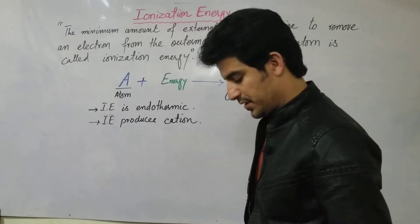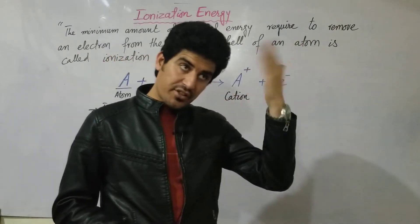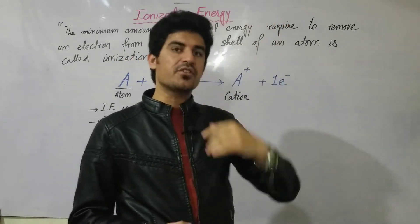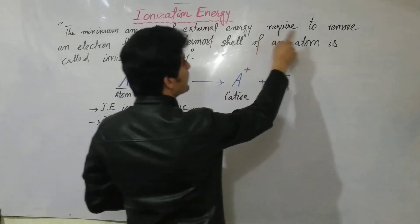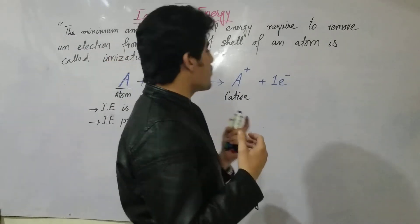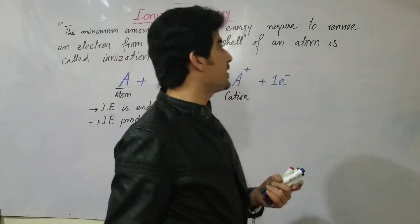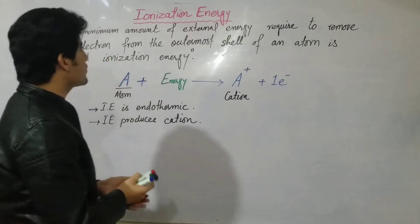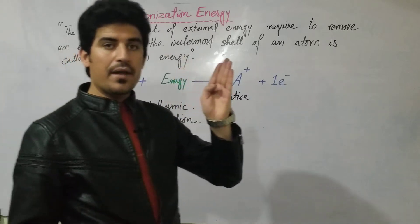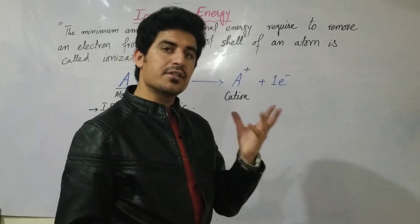Ionization energy is defined as the minimum amount of external energy required to remove an electron from the outermost shell of an atom. The energy required to remove an electron from the outermost shell of an isolated atom is called ionization energy.